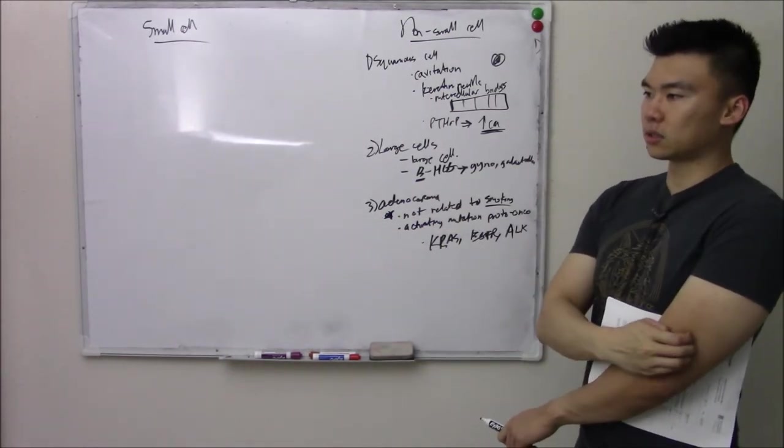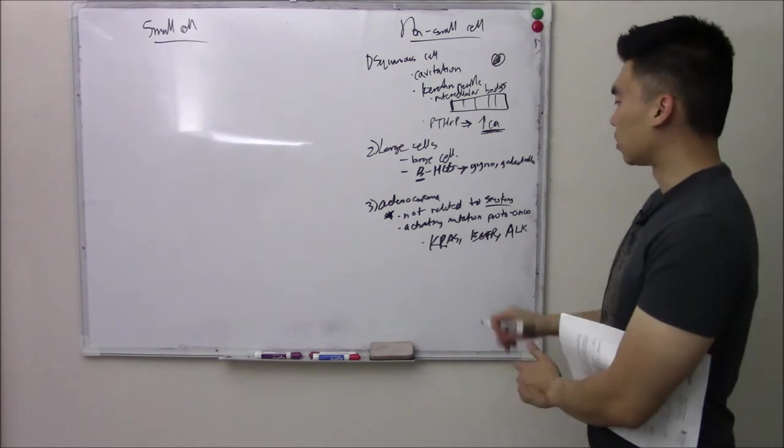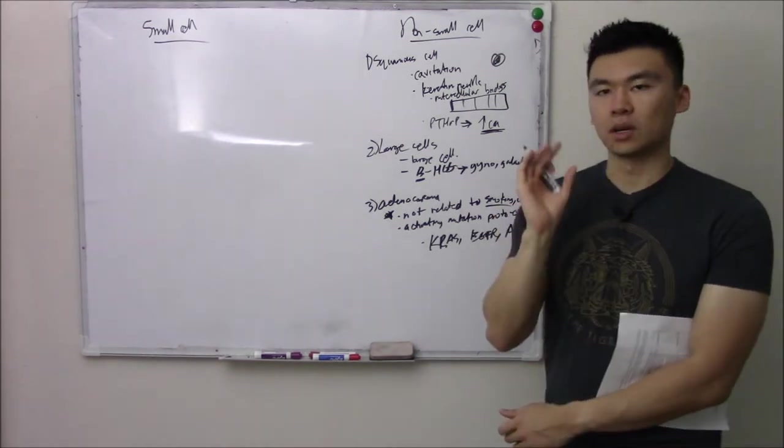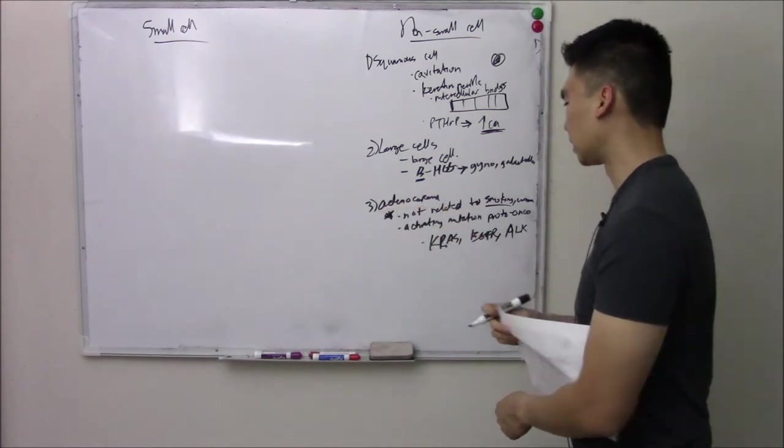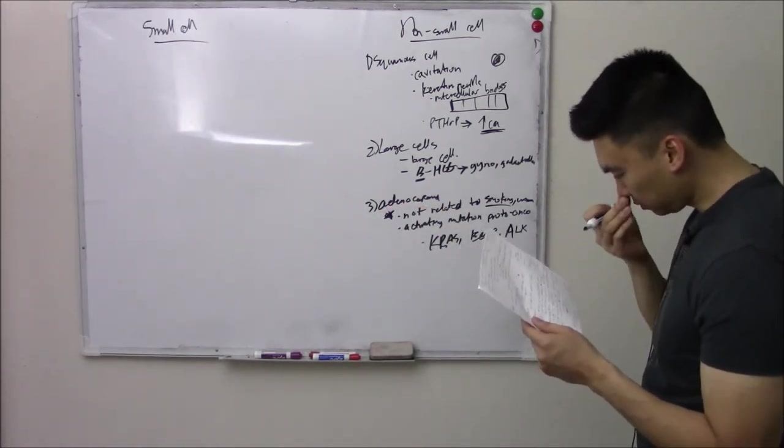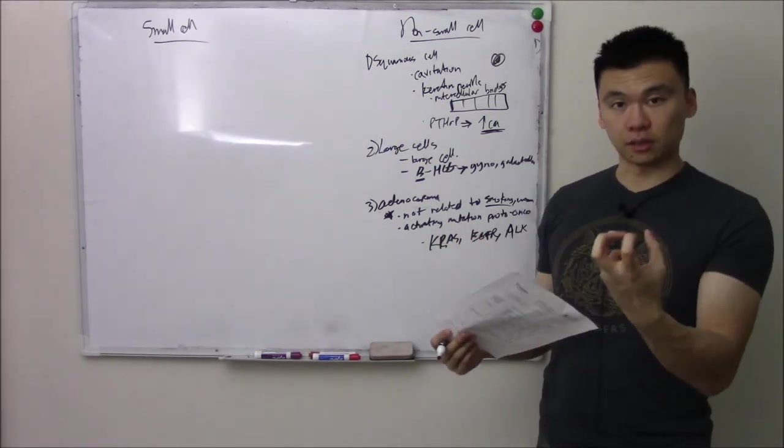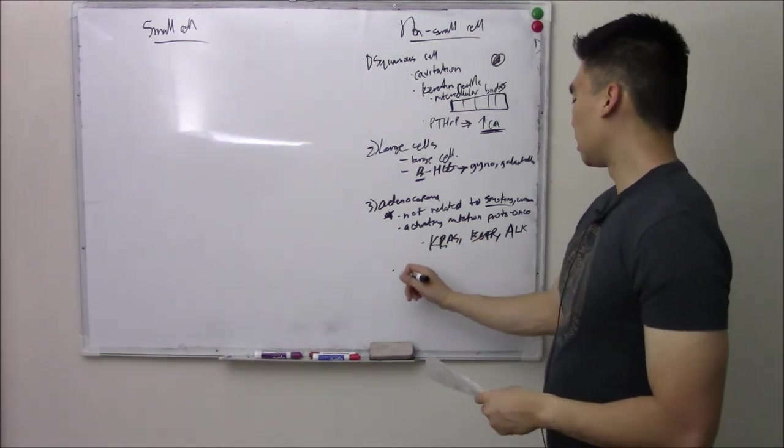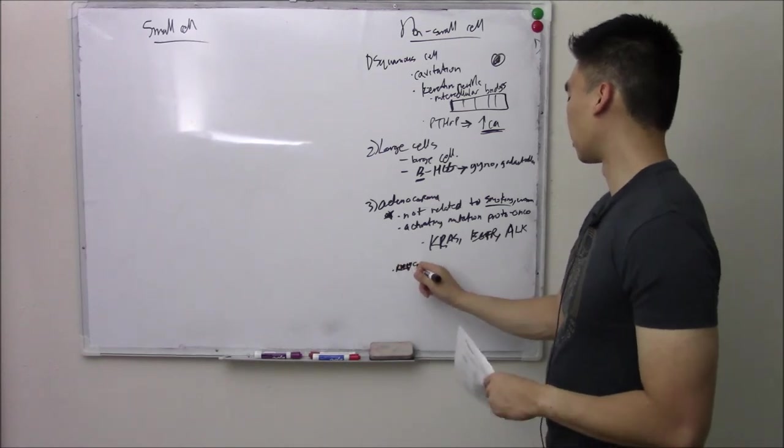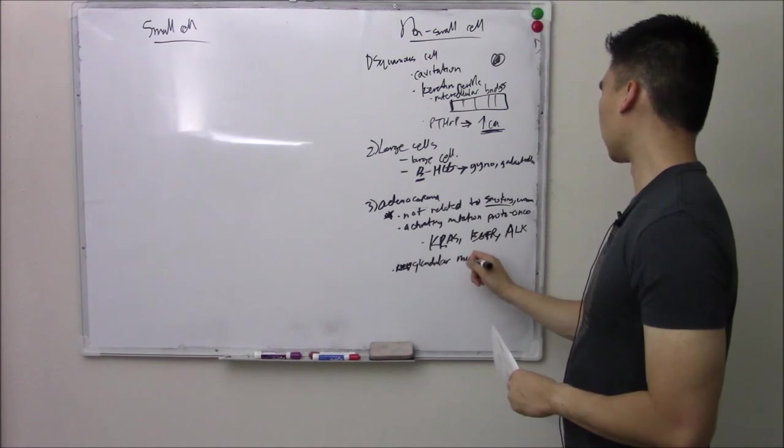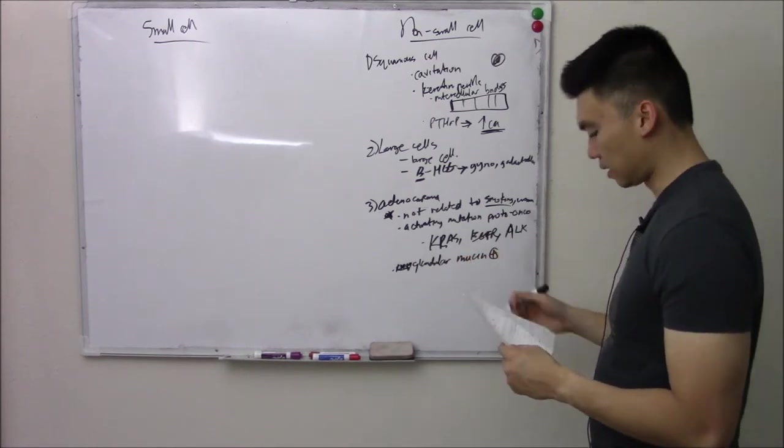And whereas most lung cancers are seen more in men, this one is seen more in women. So the epidemiology of adenocarcinoma, they love to test. They love adenocarcinoma. What do you see on histology? Why do you think they call it adeno? That means glandular. So you'll see those glandular cells. Mucin positive.